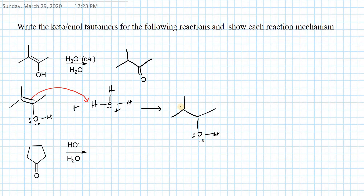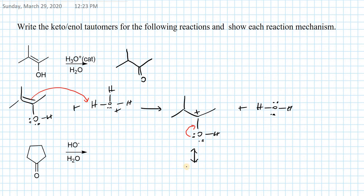Hydrogen will be added to this carbon, then we will have a carbocation here, and we have water. For this protonated alcohol we can write a resonance form — we can form a double bond here, and this is going to be our protonated ketone, with a positive charge on oxygen.